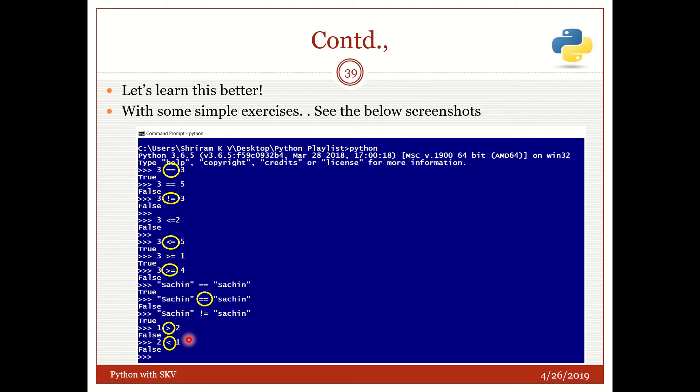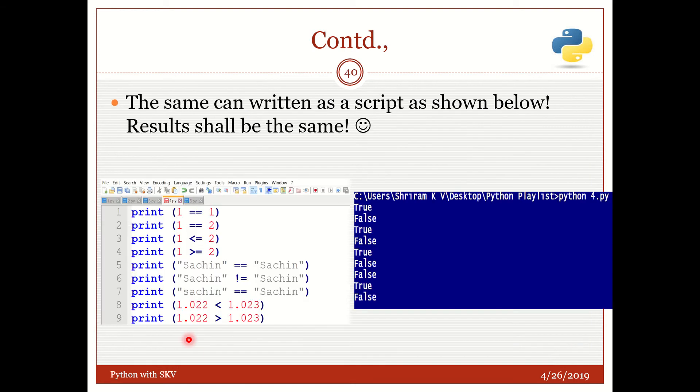So understand, Boolean is all about True or False, it's all about binary. Now I'm going to write a small script here. Last time we have tried it in the command prompt and it was all commands. Now this time we are going to write a small script.